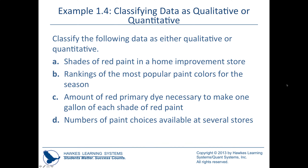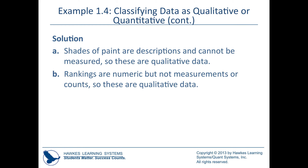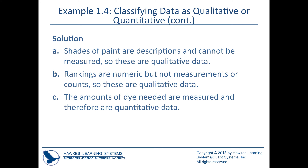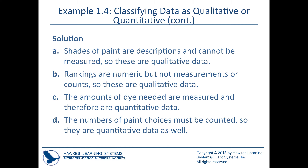Correction: rankings like first, second, third could be expressed in words or numbers, but B (rankings of most popular paint colors) is actually qualitative — it doesn't have an amount or count, just a ranking that could be put into words. The other two remain quantitative because they count something and measure something.